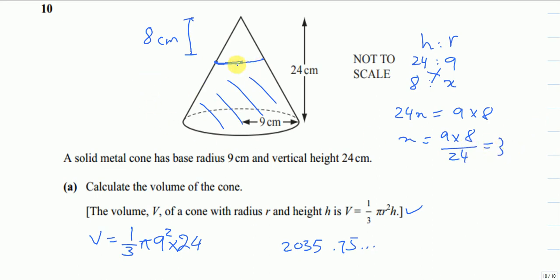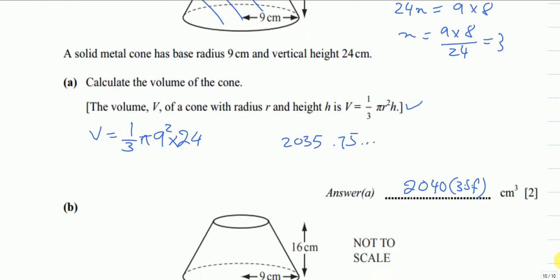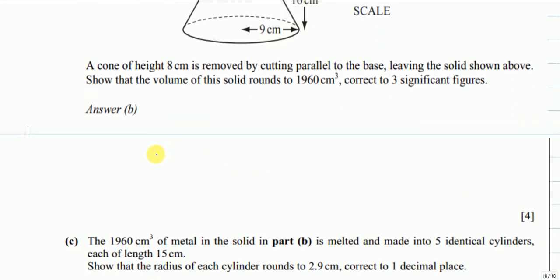So I'll use the same formula: volume = 1/3 πr²h. My r this time is 3, and the height is 8.